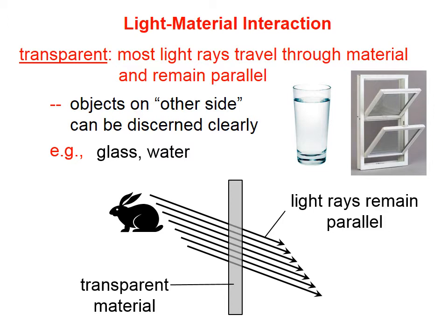If we have a window and we have an object on the left side, and if we are an observer on the right side, light comes from the sun, hits this rabbit, and reflects off in all directions.